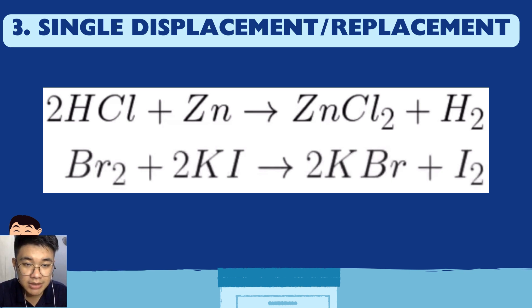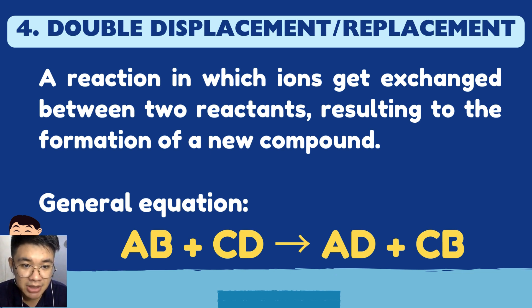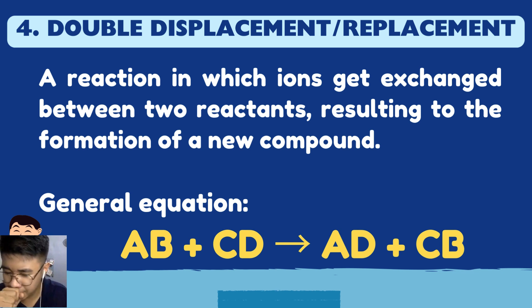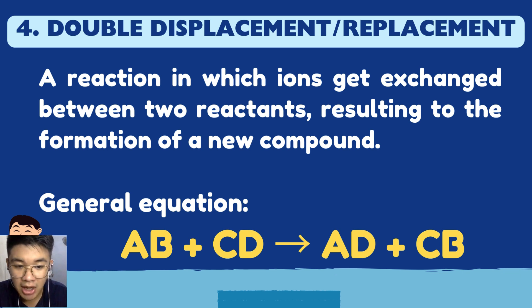The fourth type is double displacement or double replacement reaction. The main idea is an exchange of partners. This is a reaction in which ions get exchanged between two reactants, resulting in the formation of new compounds. The general equation is: AB + CD → AD + CB. Notice A and C swap partners.